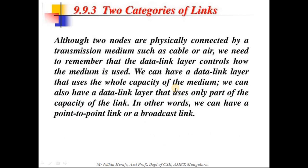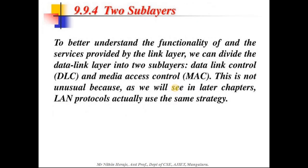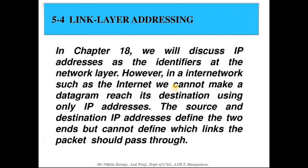There are two categories of link: point-to-point link and broadcast link. A point-to-point link is between two nodes, whereas broadcast is one-to-many nodes. The data link layer is subdivided into two sublayers: Data Link Control (DLC) and Media Access Control (MAC). DLC handles both point-to-point and broadcast, while MAC is specifically meant to deal with broadcast networks.